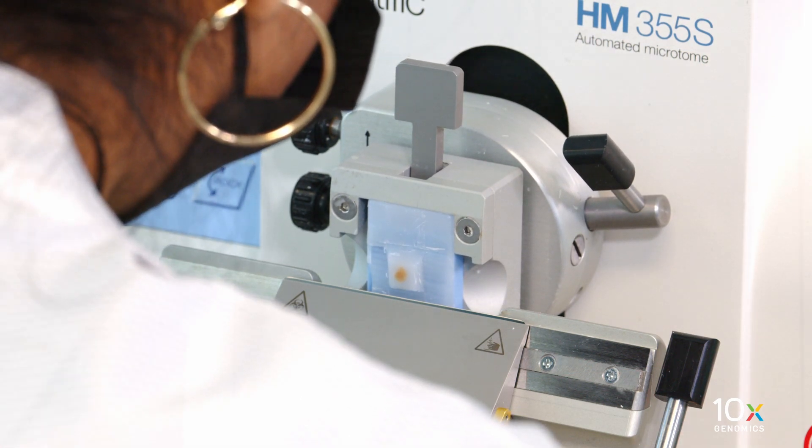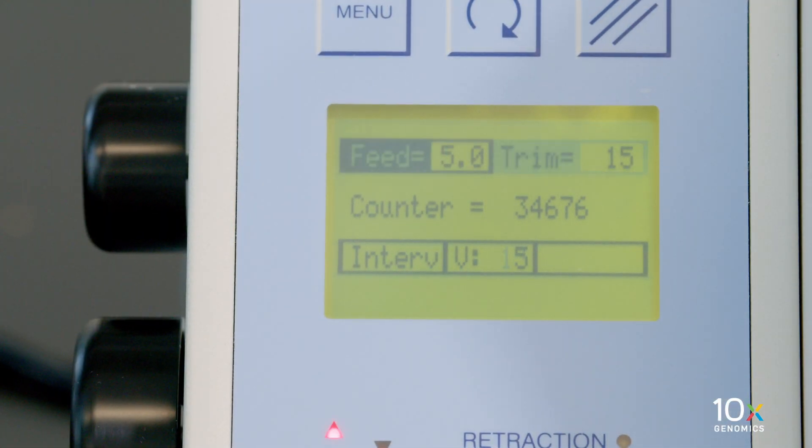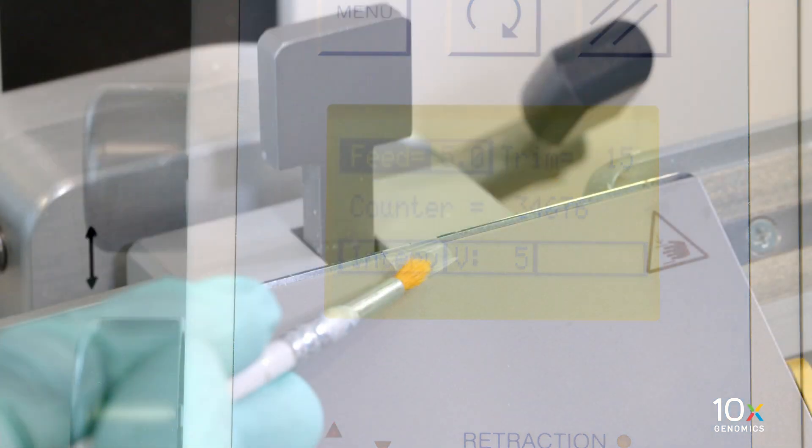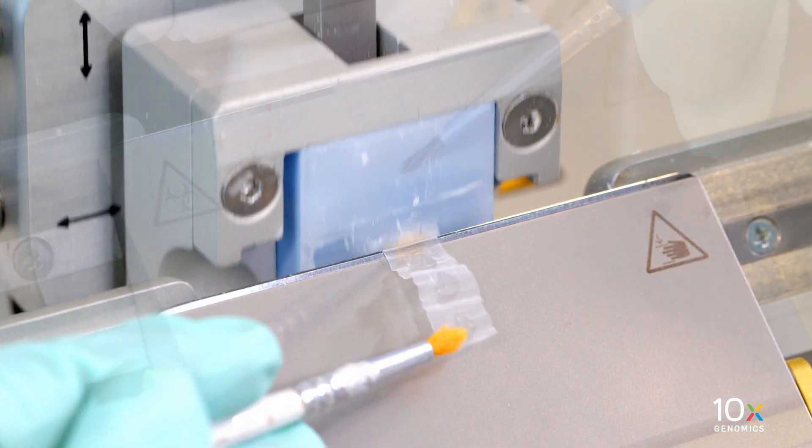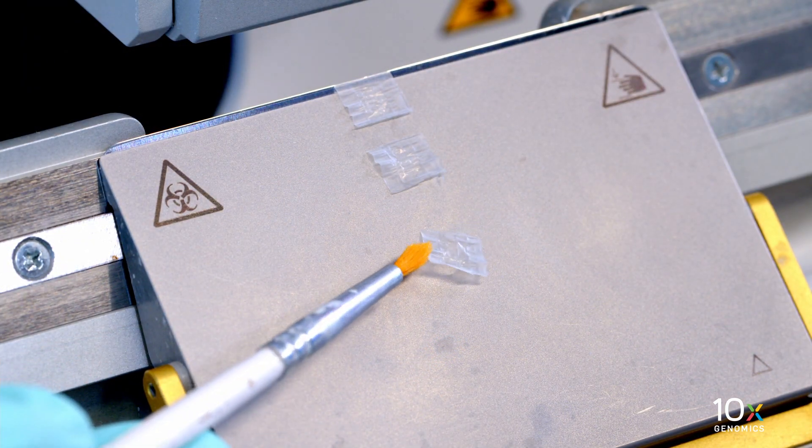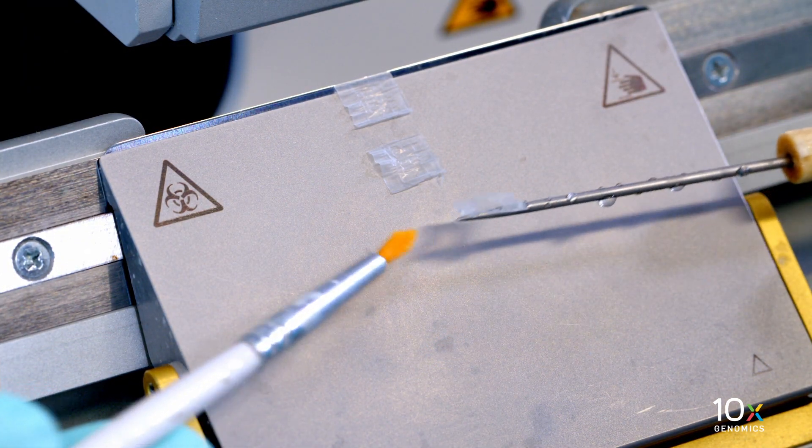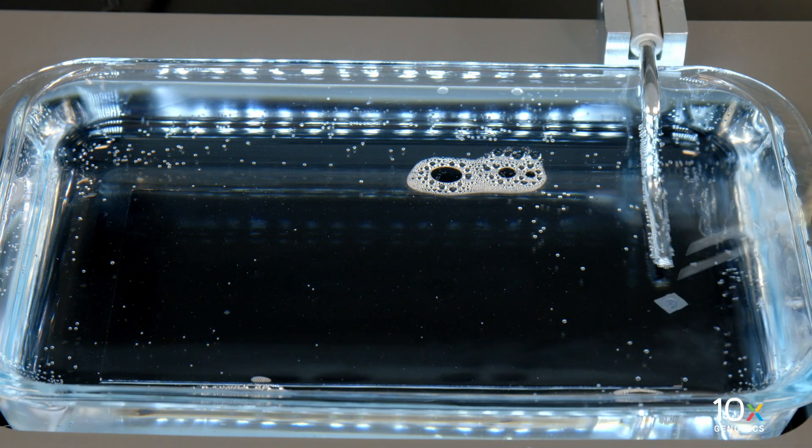Set the microtome to 5 microns for tissue sectioning and begin sectioning with chilled sectioning probes. Place the sections on the water surface of the water bath. Let the section float on the water bath surface until most of it is flat and without wrinkles.